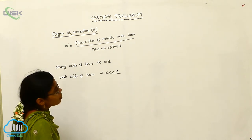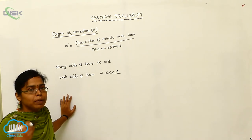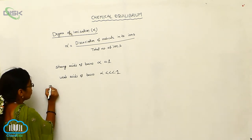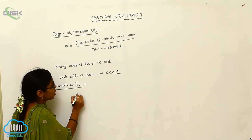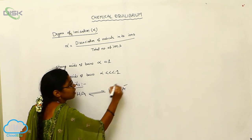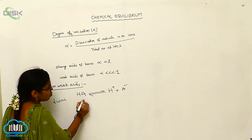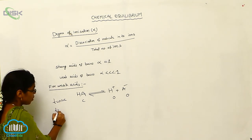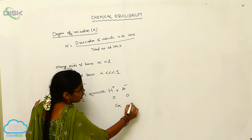To calculate the degree of ionization mathematically, take a weak acid HA undergoing reversible dissociation: HA ⇌ H⁺ + A⁻. At time t = 0, concentration of HA = C, and [H⁺] = 0, [A⁻] = 0. After some time, [H⁺] = Cα, [A⁻] = Cα, and [HA] = C − Cα.